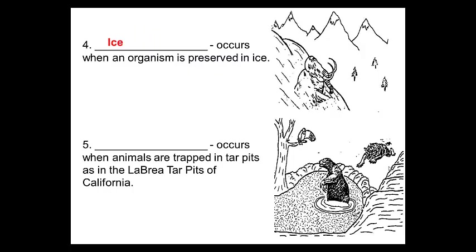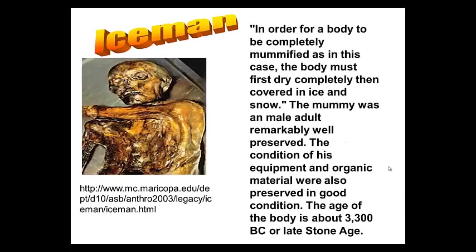Number four: ice. This occurs when organisms are preserved in ice, like the woolly mammoth trapped in ice — very, very well preserved. Number five: tar. Believe it or not, tar pits. Occurs when animals are trapped in tar pits, as in the La Brea tar pits of California, where you'll actually still have some evidence of the animals.